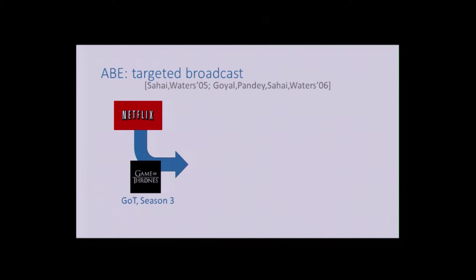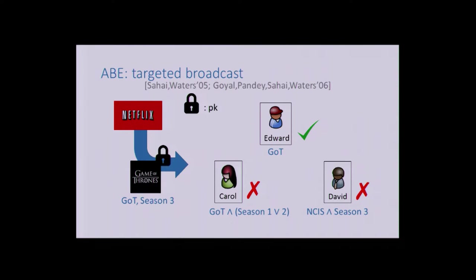Suppose Netflix wants to broadcast some TV show—for example, Game of Thrones season three. It puts it online, but this is not free content, so it should not be accessible to everyone, so it's going to be encrypted. We have a set of users, and each user pays for a different package. Edward paid for the whole series, Carol paid for only seasons one and two, and David paid for something else.